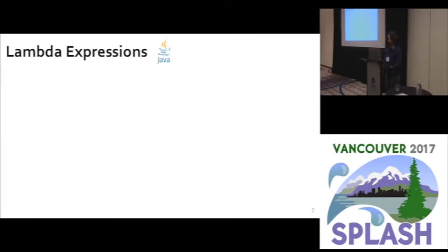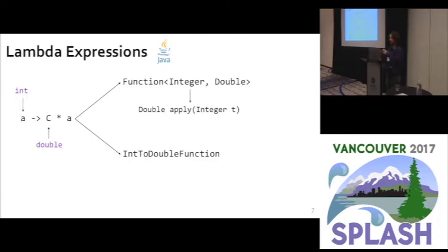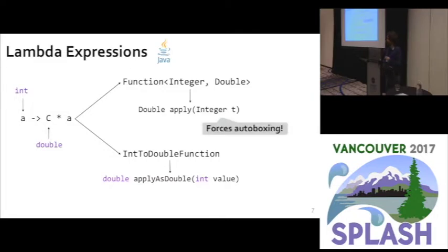It was a cold evening in Montreal. I was talking to my friend Amaya, and we ended up seeing something like that in one of the projects we were analyzing — a simple lambda expression taking an int and returning a double constant. We found it was bound to Function<Integer, Double>, but the developer could have used IntToDoubleFunction instead. The difference is that using Function<Integer, Double> forces autoboxing with wrapper classes, whereas IntToDoubleFunction uses primitives and avoids autoboxing.